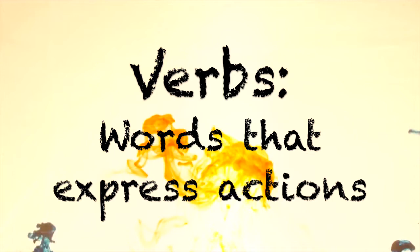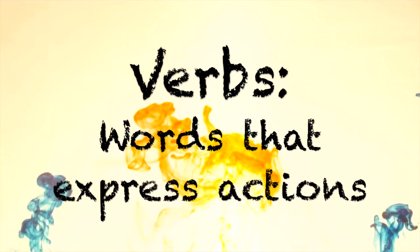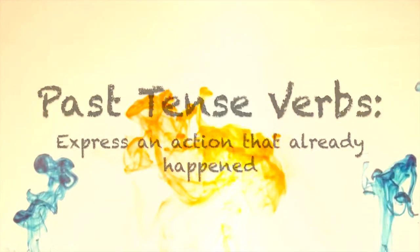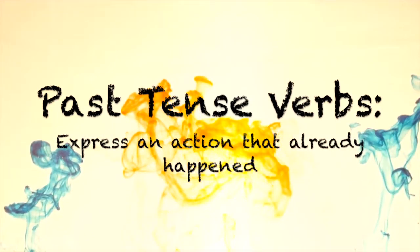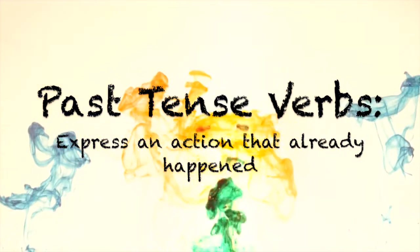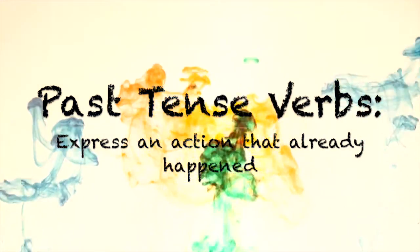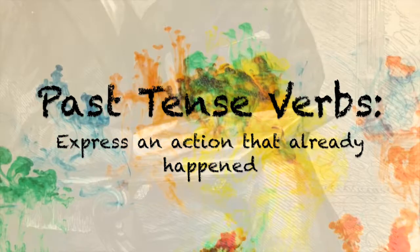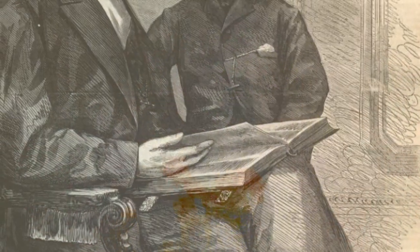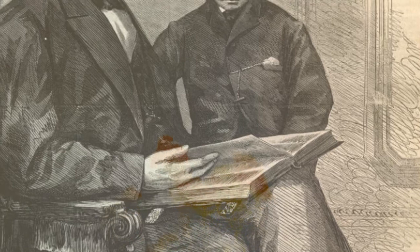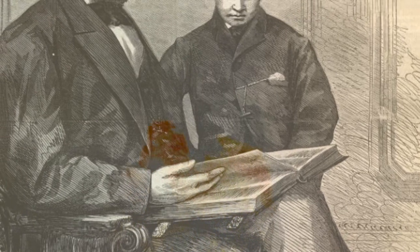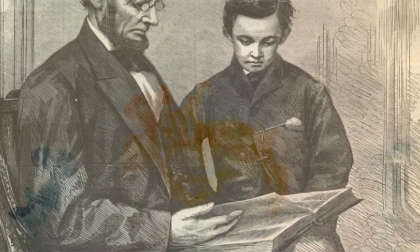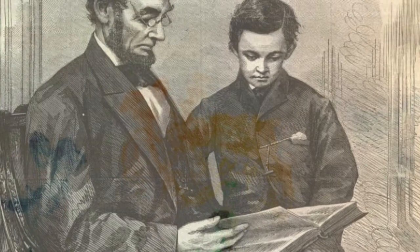Verbs are words that express actions. Past tense verbs express an action that already happened. Past tense verbs help us imagine an action that somebody has already done. We can use them to tell stories.